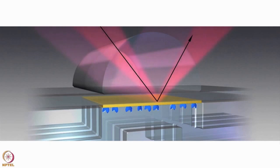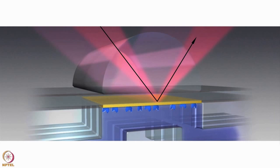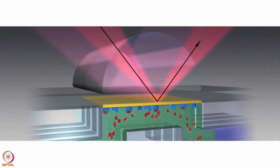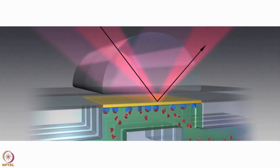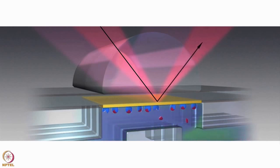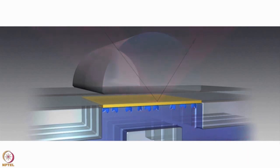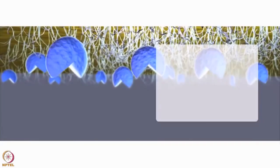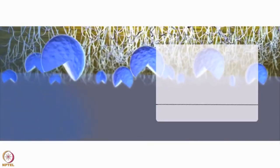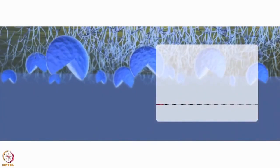Biacore uses the phenomenon of surface plasmon resonance to detect biomolecular interactions as they happen. SPR causes a reduction in the intensity of light reflected at a specific angle from the glass side of the sensor surface. As molecules bind to the sensor surface, the refractive index close to the surface changes, altering the angle of minimum reflected intensity. The change in SPR angle is proportional to the mass of material bound. The sensor surface, the microfluidic system, and the SPR detection unit work together to measure biomolecular interactions.